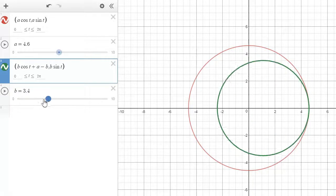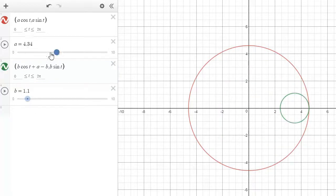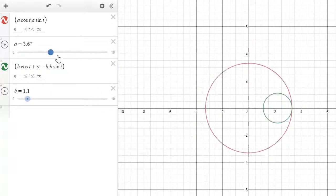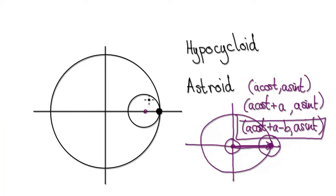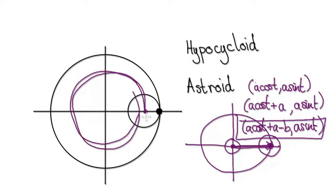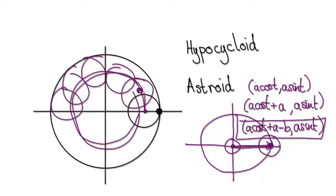Now as you vary the radius of the small circle it will change accordingly, and you can change the radius of the big circle too. Our next task is to get it so that the green circle can move around — we need to be able to move it around like this. Notice that the center of the green circle follows this inner circle here. We'll handle this in the next video.